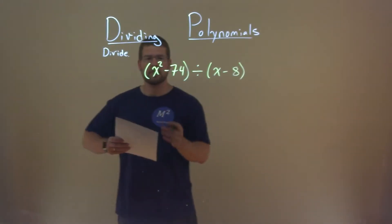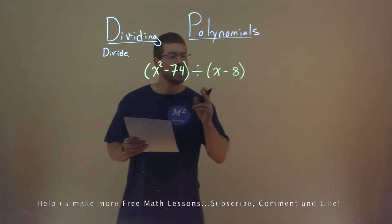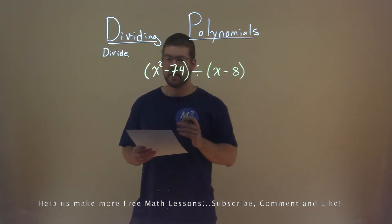We're given this problem right here, x squared minus 74, divided by x minus 8, and we need to divide this.